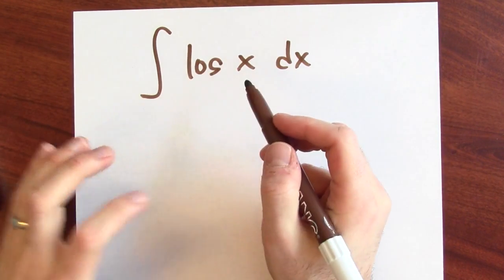Just to remind you, this is natural log. At first, it looks like there's nothing helpful here. What will my u and my dv be?